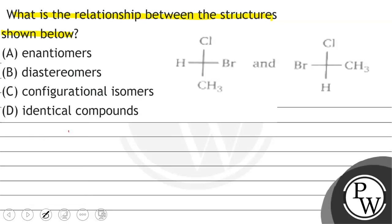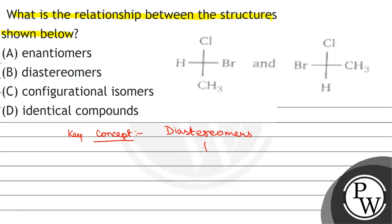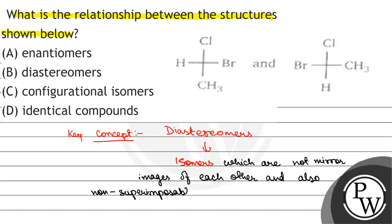First of all, we will see what will be the key concept within the question. The key concept within the question will be diastereomers. Diastereomers are isomers which are non-mirror images of each other, and also non-superimposable and non-identical.